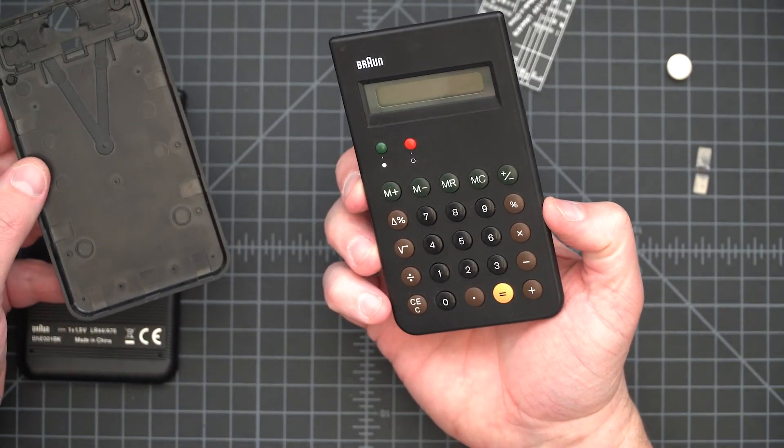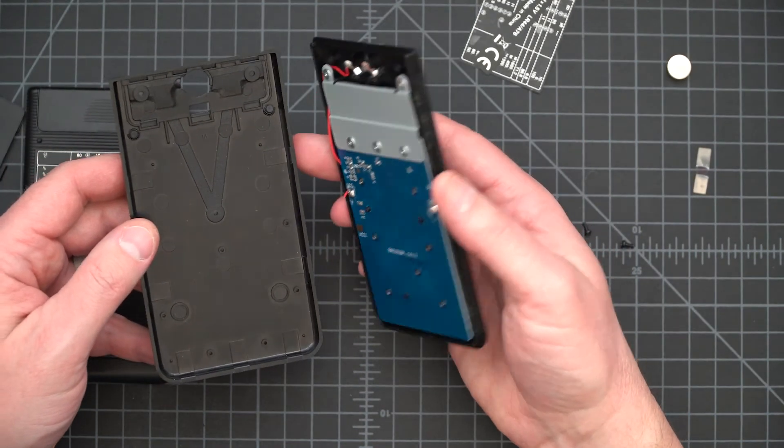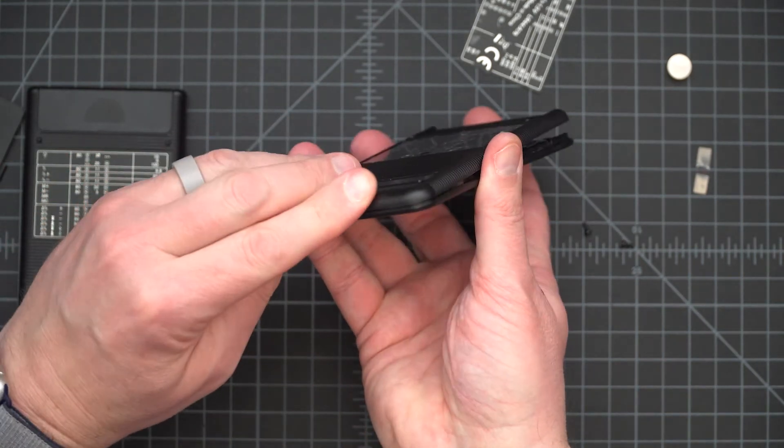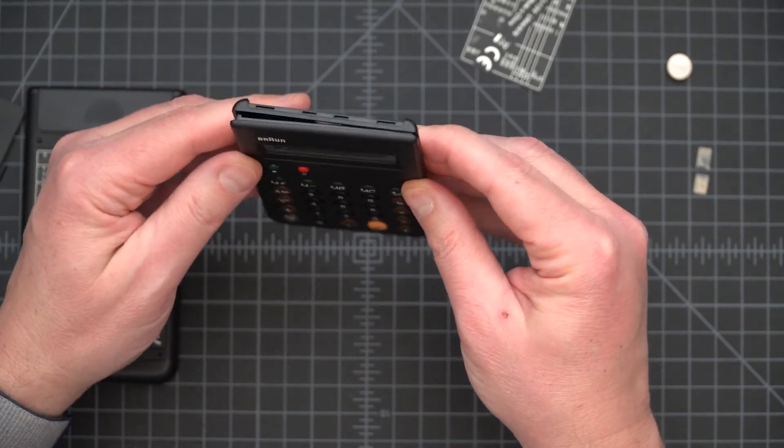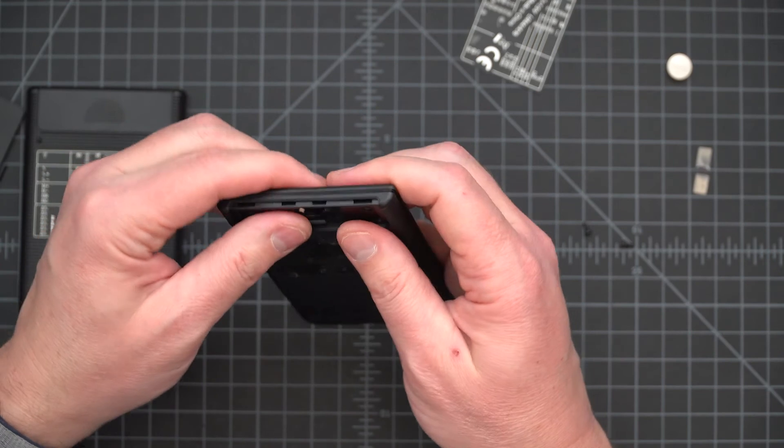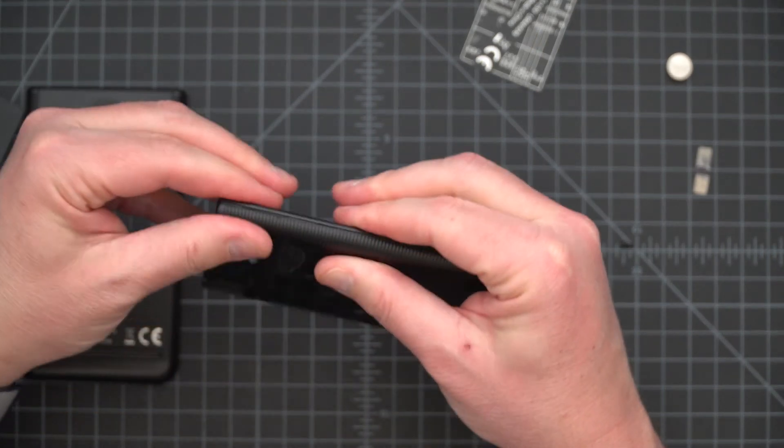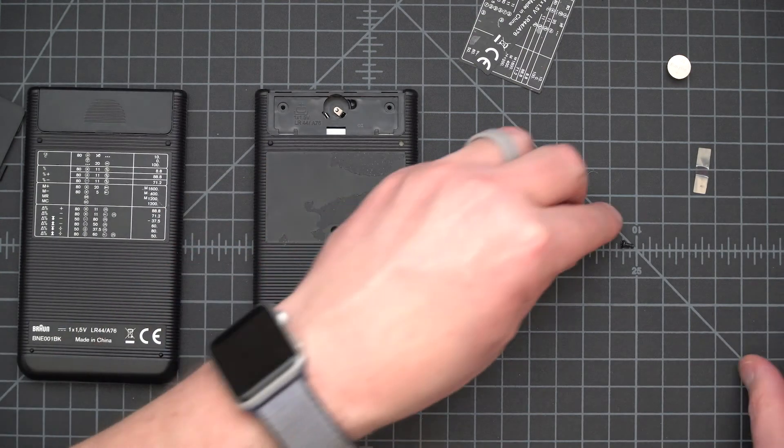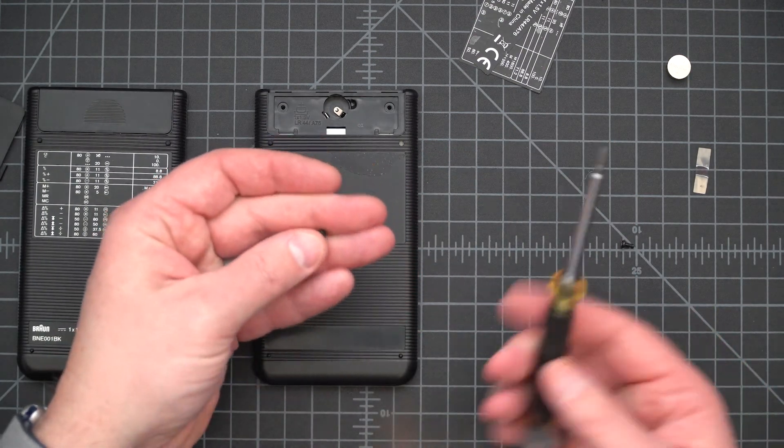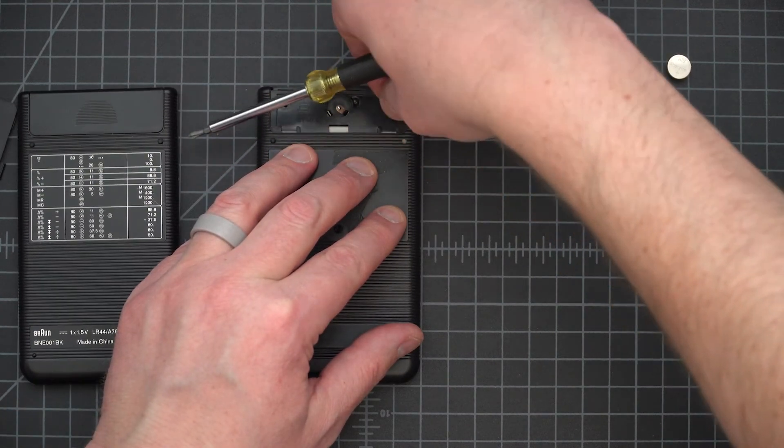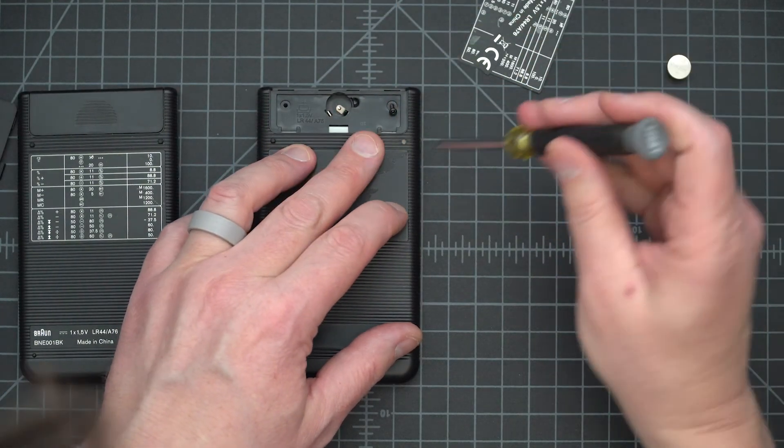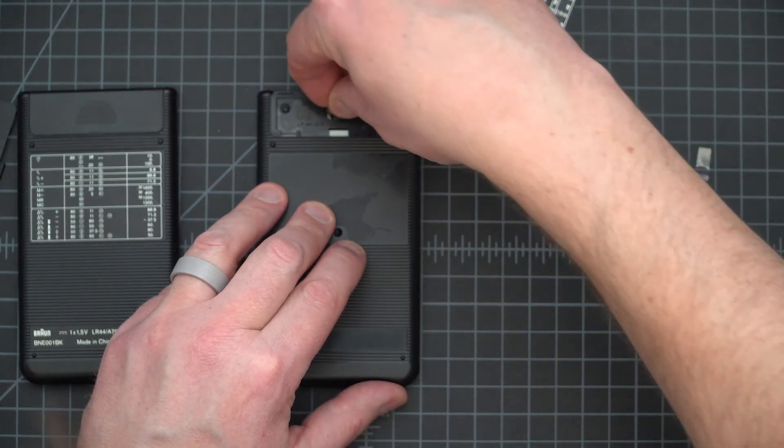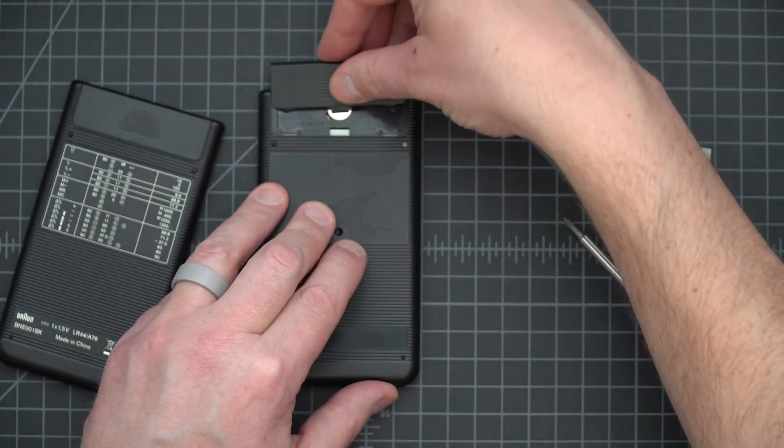Then this thing is the proper calculator. Now what I can do is put this together, starting at the bottom. Pop the battery in here. And the cover on.